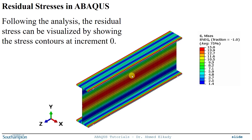After running your analysis, go to results and show the stress contours. At increment zero you should see the stress contours corresponding to what you defined. I'm showing von Mises here, but you can show the specific component you applied and see contours matching the distribution you modeled. Now let's go to Abaqus and do a quick example to illustrate this.